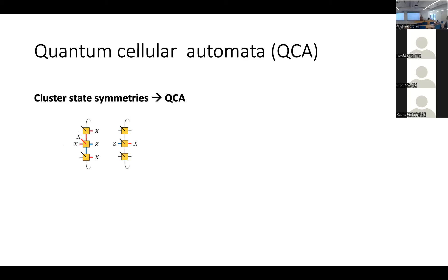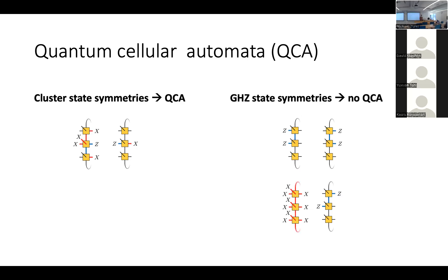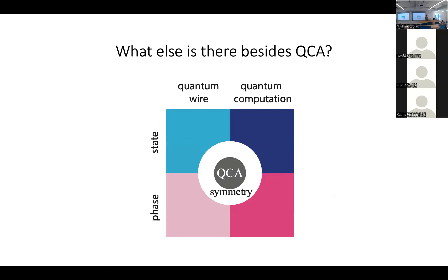The cluster state symmetries correspond to a QCA, but the GHZ symmetries do not — you can see this because they're not unitary: putting ZZ on the left maps to the identity. This takes us outside the QCA bubble into territory we don't yet know how to handle. That's essentially the question of this project: what is there besides QCA? There is work on quantum wire, quantum computation, and computational phases when symmetries are associated with QCA, but we want to know what happens in the general case where we have symmetries but not a QCA.